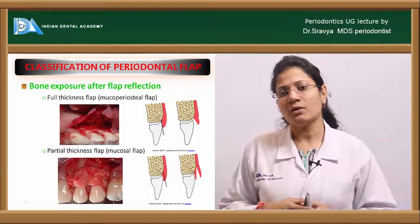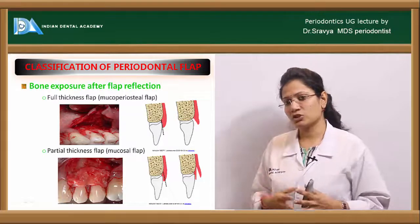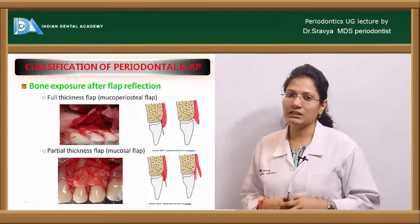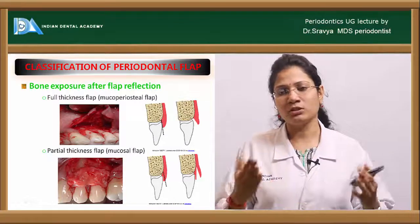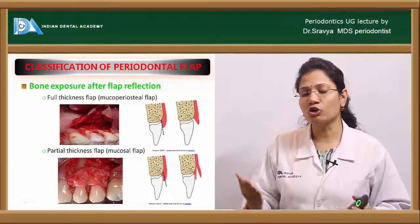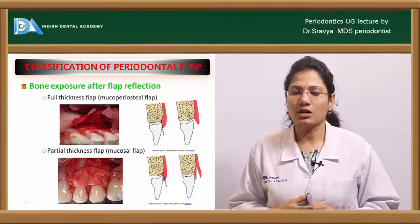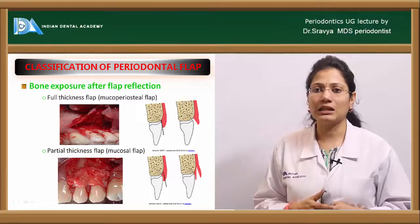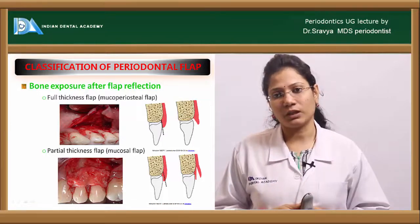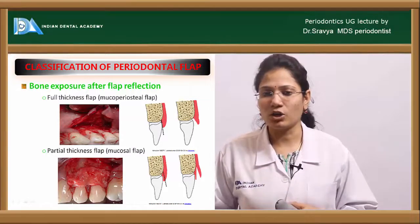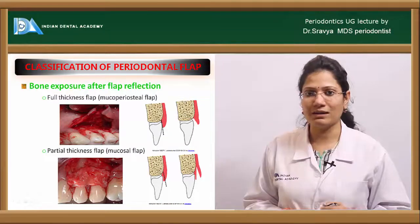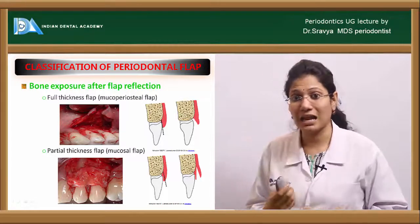Flaps can be classified in various ways. First, based on bone exposure after flap reflection: either a full thickness flap or a partial thickness flap. A full thickness flap, also called a mucoperiosteal flap, exposes the entire gingival epithelium, connective tissue, and periosteum covering the bone. A partial thickness flap reflects only the epithelium and part of the connective tissue, leaving the periosteum still covering the alveolar bone. Partial thickness flaps are mainly used for mucogingival corrections, while full thickness flaps are used for pocket reduction or elimination.